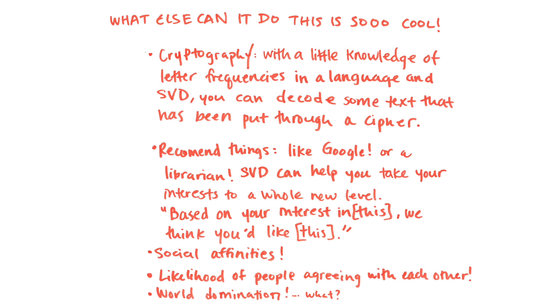You might be wondering what else SVD can do because maybe you're not interested in image compression. Maybe you like your images nice and big. Well, you can do cryptography. If you know a little bit about how frequently letters show up in any particular language's text and you have some text that's been put through a cipher, you can use SVD to figure out how many steps the cipher had and what this text might say. You can recommend things like Google or a librarian. SVD can help you find based on one thing you're interested in what else you might be interested in. Or you can look at social affinities like who might be likely to hang out with who or who might be likely to agree with another person or be agreed with. And there are lots of other applications of SVD that you can totally look into on your own time.